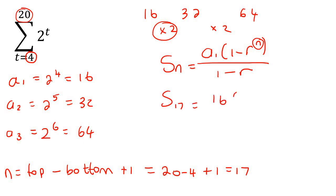So, we can say 16, and then 1 minus 2 to the power of 17, over 1 minus 2. And so, that's going to be 2,097,136, as our final answer. So, let's go. Let's go.